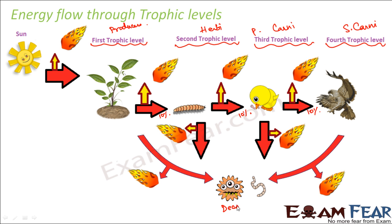If you look at the entire energy flow, you see that a lot of energy is lost in the form of heat. Since a lot of energy is lost as heat, that is why we have Lindeman's 10% law — that only 10% of energy gets transferred from one trophic level to the next trophic level. This shows the heat dissipation at each trophic level.